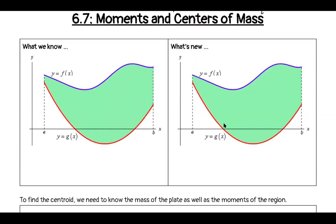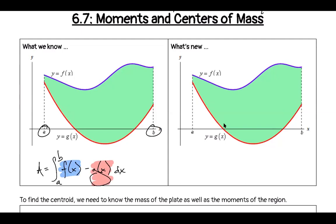We have the same picture on both sides — that's not a typo. We're going to look at both pictures and build on our knowledge of integrals and apply them to a new situation. If I wanted to write an integral that represented the area for the left-hand table, it would be the integral of f of x minus g of x, with bounds from a to b.